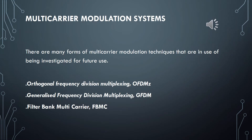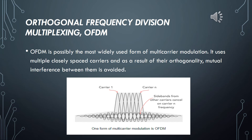There are many forms of multi-carrier modulation techniques that are in use or being investigated for near future use. We're going to talk about the orthogonal frequency division multiplexing, the generalized frequency division multiplexing, and the filter bank multi-carrier. So let's start with the orthogonal frequency division multiplexing. OFDM is possibly the most widely used form of multi-carrier modulation. It uses multiple closely spaced carriers, and as a result of their orthogonality, mutual interference between them is avoided. In the next slide, we're going to see the difference between OFDM and FDM to see it more clearly.